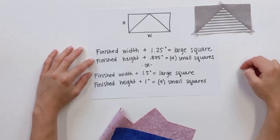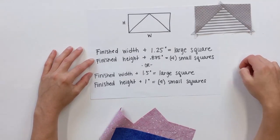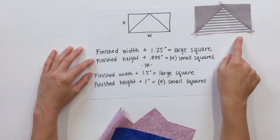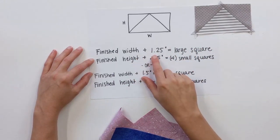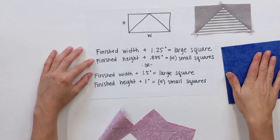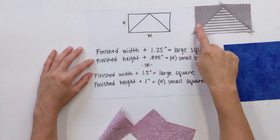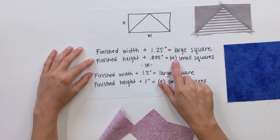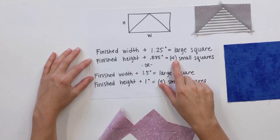First formula I'm showing here is the traditional one that I've always found when I looked online. Finished width, this guy, so we're four inches, plus 1.25 inches. That's your large square. That's this guy here. Finished height, this guy, plus 7/8 of an inch. That's what you need to cut your four small squares out.